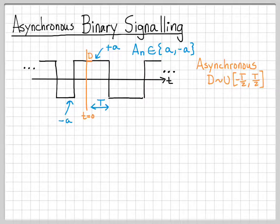For this particular sketch, the time origin doesn't necessarily line up with a pulse boundary. This sample function has some displacement with respect to the time origin. In general, D is a uniform random variable between minus T over 2 and T over 2. Where the time origin is at the middle pulse is itself a random quantity. That's why we call it asynchronous - the pulse boundaries aren't synchronized to the time origin.